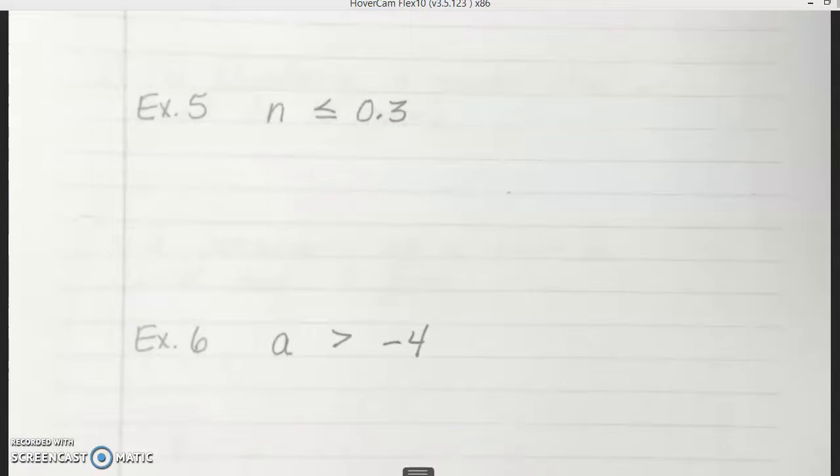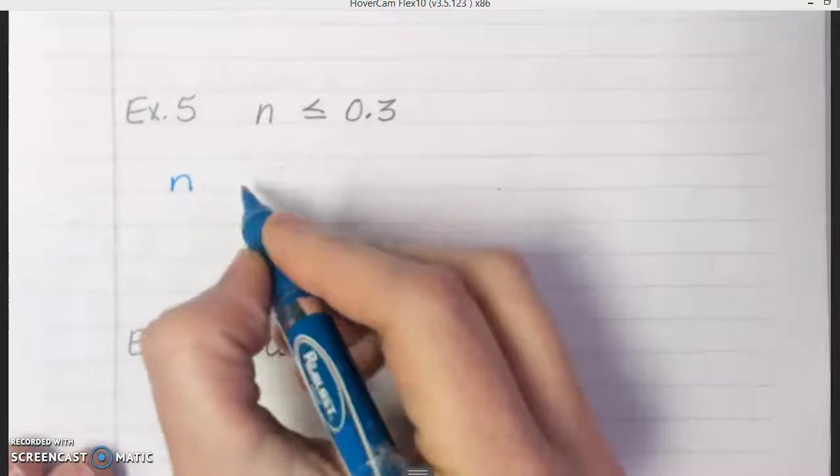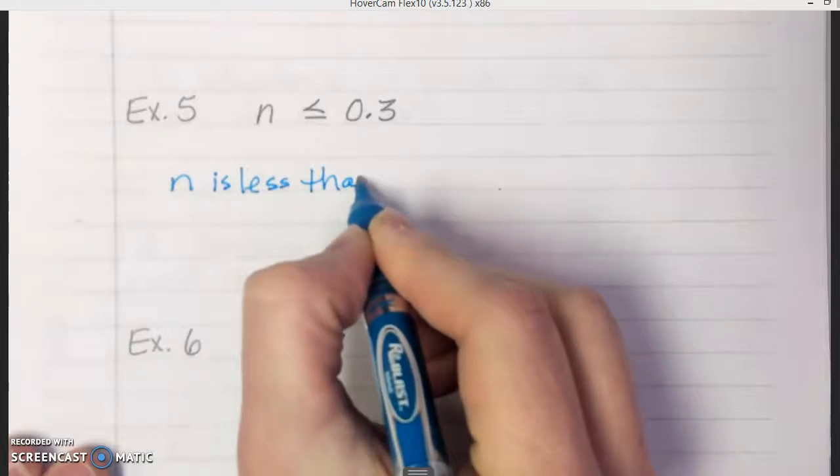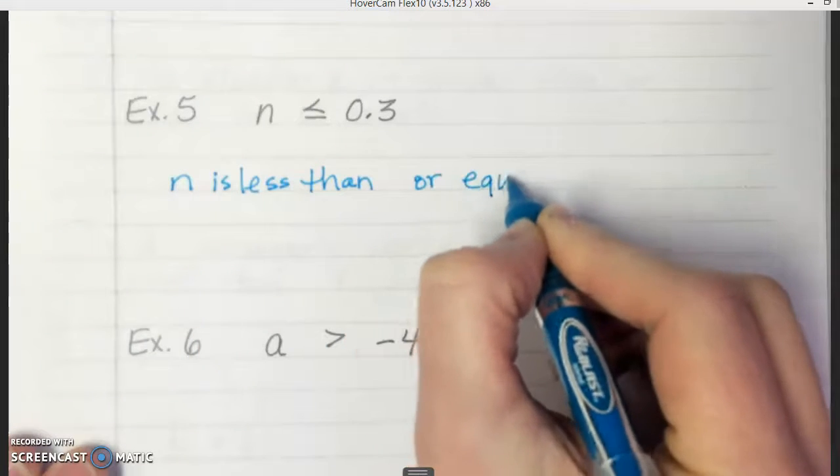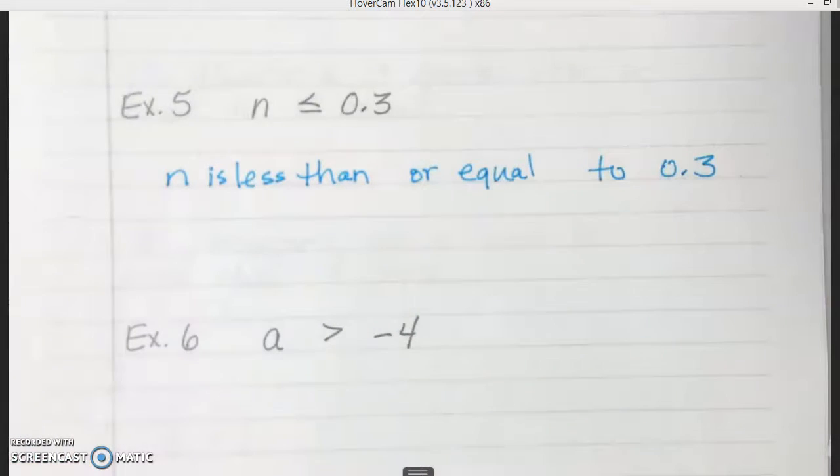So for number five, we're going to write two word sentences for this inequality. So we could say, and we don't have to give anything for n. We can just let it stay n. So we don't have to say anything like the number of people or anything like that. We can just leave it at n. So we could say n is, I forgot the word is, n is less than or equal to 0.3. And that's probably the one that we say. That's the way we probably would typically read it to begin with.